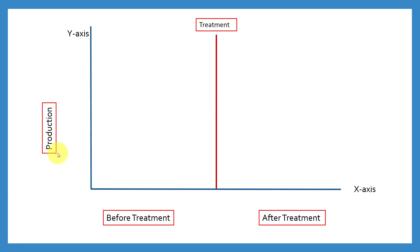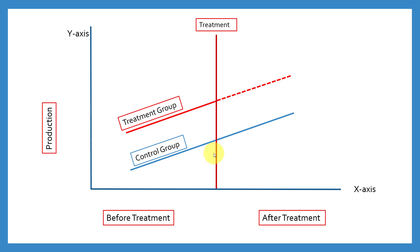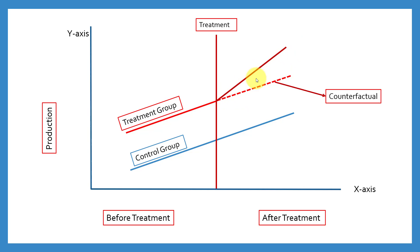Graphically, we have production on the y-axis and before/after treatment on the x-axis, with the treatment introduction at a specific time period. We can see the treatment group's production increasing after the treatment. The dotted line represents the counterfactual — the thing we cannot observe — which is what the treatment group's production would have been if the treatment had not been given. The solid red line is the actual production.